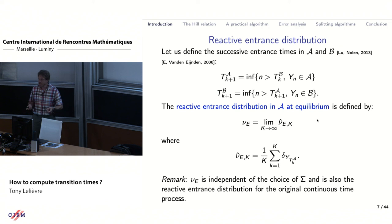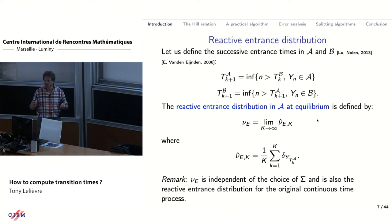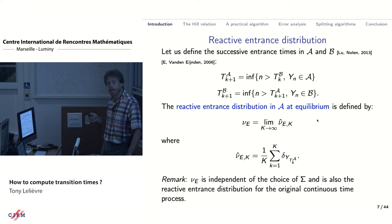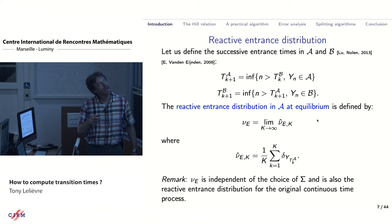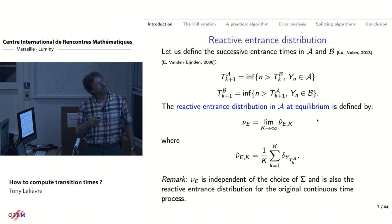Now I can recast the quantity of interest — the transition times from A to B for x_t — in terms of Y_n. I will explain how, if I am able to sample Y_n efficiently, I can compute my quantity of interest. You take the successive times where you visit A and B; now time is discrete, and you look at when Y_n is in A after visiting B, and similarly going to B.